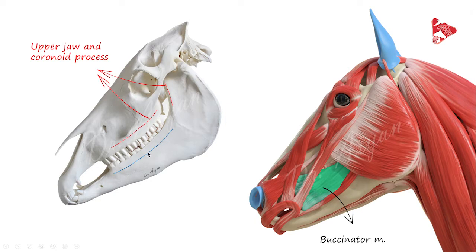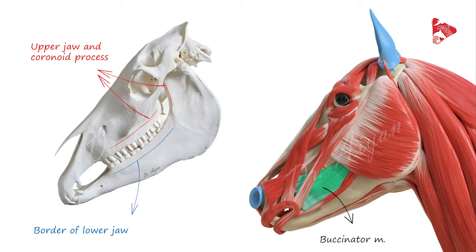The second origin is the upper jaw below the facial crest. This muscle inserts to the lower jaw at the mandible. Its function is to push food toward the oral cavity, helping move food inside the oral cavity. This muscle also forms the lateral wall of the oral cavity.